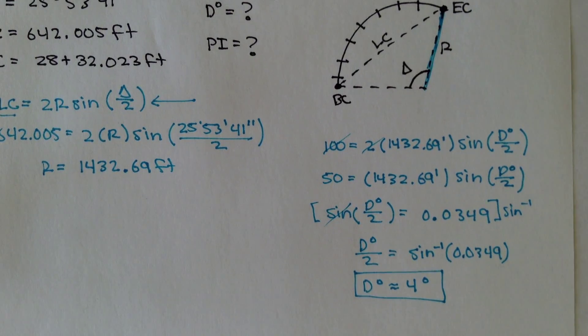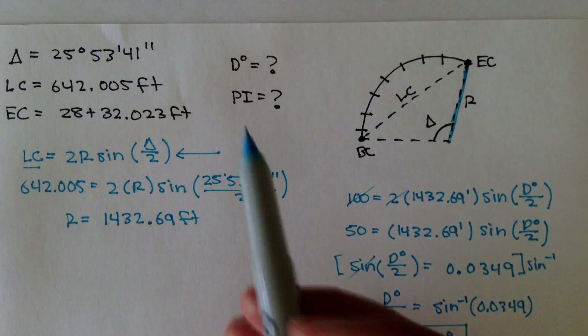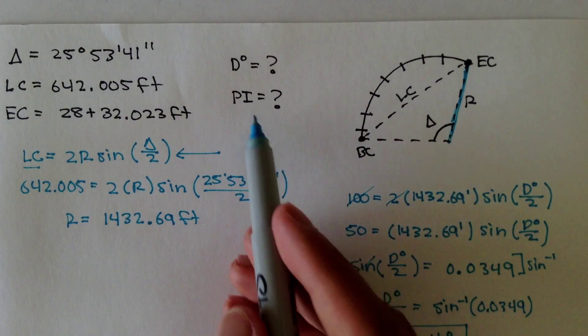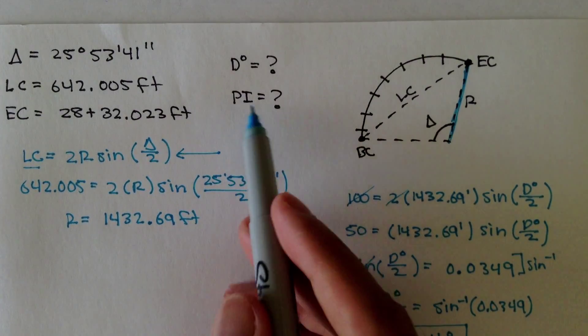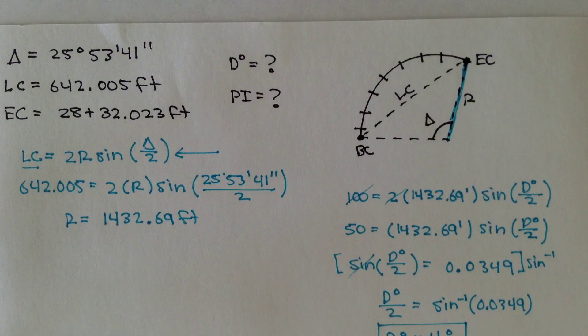Alright, welcome back. In the last video we figured out what the degree of curvature was, and in this part we're going to figure out where the point of intersection is located on this curve.